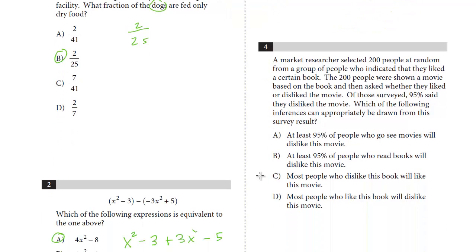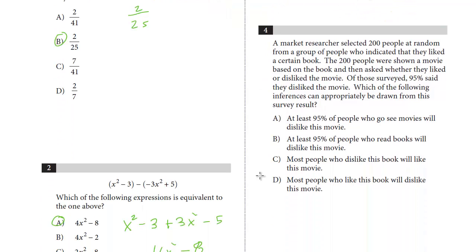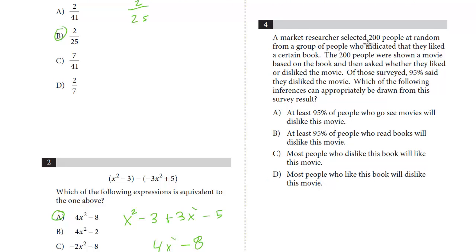All right, last question on this page, number 4. A market researcher selected 200 people at random from a certain group of people who indicated they liked a certain book. The 200 people were shown a movie based on the book and then asked whether they liked or disliked the movie. Of those surveyed, 95% said they disliked the movie. Which of the following inferences can be drawn from this survey result? Popular question on the new test. Samples and surveys, these will only appear in section 4, the calculator permitted section. When you have a sample, the first point you always have to realize is whatever group is sampled, that population, that group is the only group you can ever make a determination about.